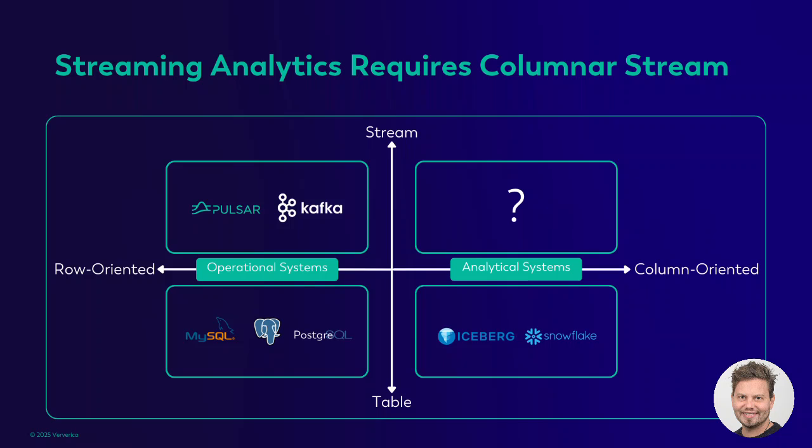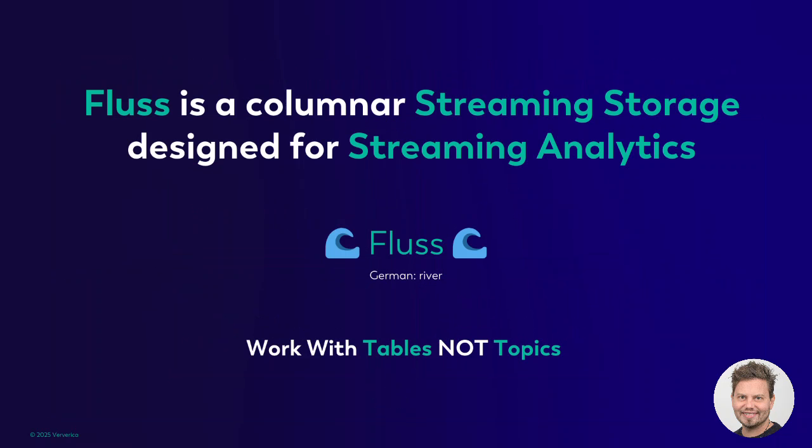So in reality, we have been missing for a long time a columnar streaming storage. Reorienting streaming storage systems like Kafka or Pulsar for real-time analytics poses limitations, because these systems were created for streaming events, not analyzing them. In order to account for such limitations, make Flink work more like a database, and bring a proper streaming storage to the industry, the Fluss project was created.